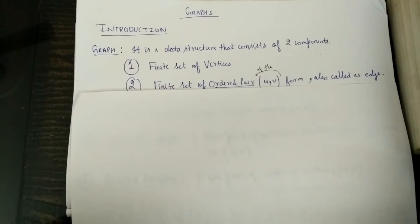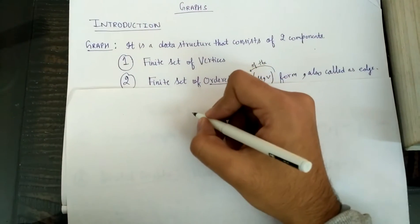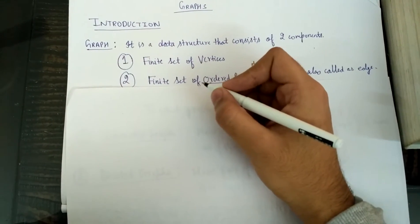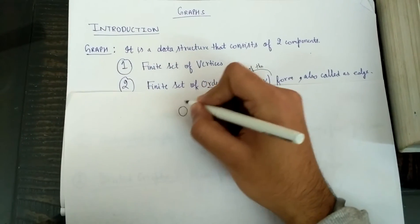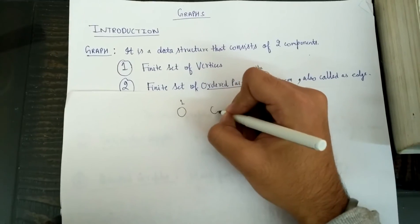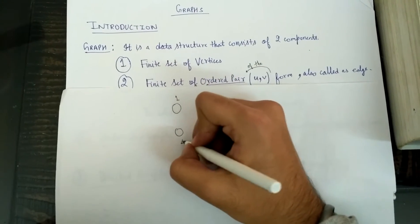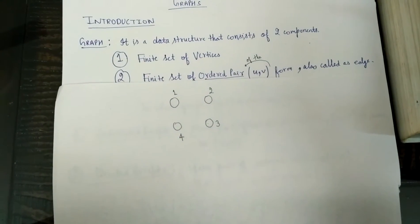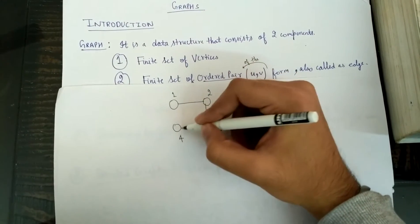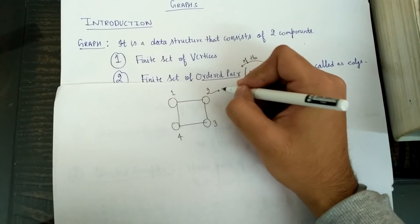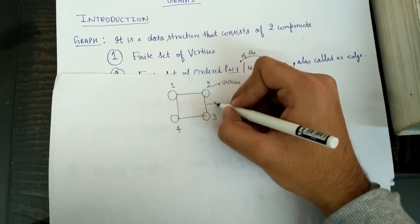Let's illustrate it with an example. Our graph consists of a set of vertices and a set of edges. Let's say these are the vertices: 1, 2, 3, and 4. The lines which connect them form the edges of the graph. These are called vertices of the graph, and these are called edges of the graph.